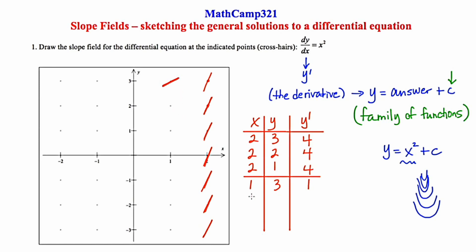Our next point is (1, 2), and 1 squared is 1. So all of the little segments in this column are going to have that same slope of 1 and will all be parallel. These two examples really help us complete that whole column of points.